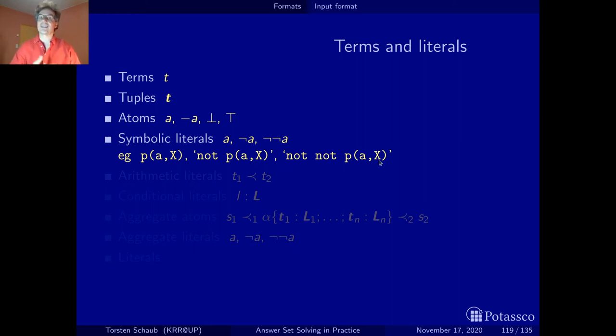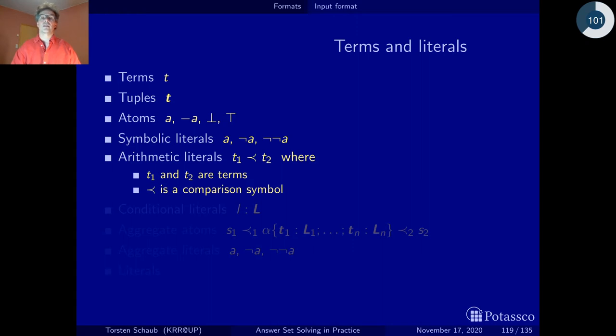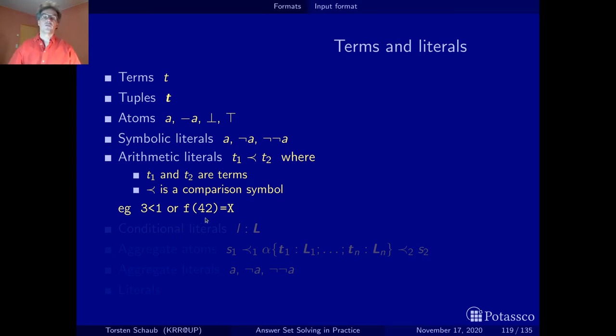Another particular kind of literals are arithmetic literals. Here you have terms—maybe arbitrary terms—and this is a comparison symbol here, and so this gives you an arithmetic literal. Importantly, all terms—numbers, constants, functional terms, all ground terms—are totally ordered in Gringo. So you can always take a term and another term and compare them, and you get a result whether one is larger than the other. This is actually very handy when it comes to modeling. Here's an example: you can write 3 < 1 or f(42) = x. These are more or less the most primitive literals.